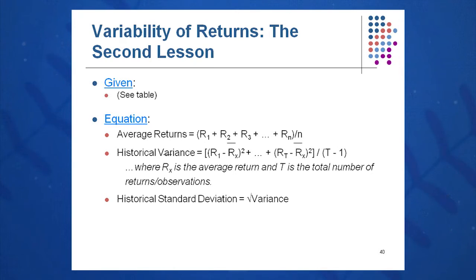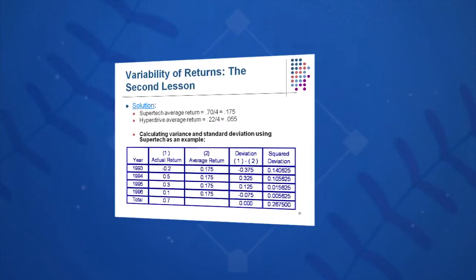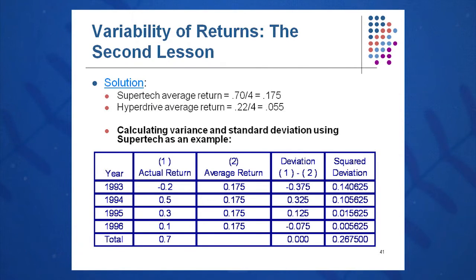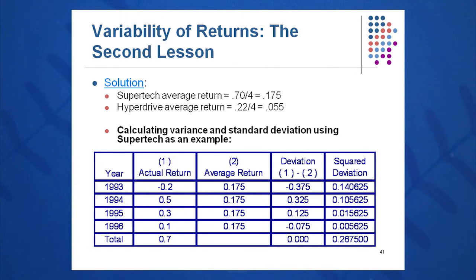Let's do Supertech. It's basically a five-step process. Step zero: change all of our percentages to decimals — make yourself a note of that. So we're going to change minus 20% to minus 0.2, 50% to 0.5, 30% to 0.3, and 10% to 0.1.